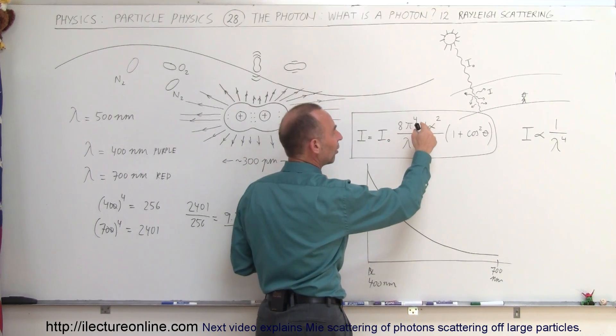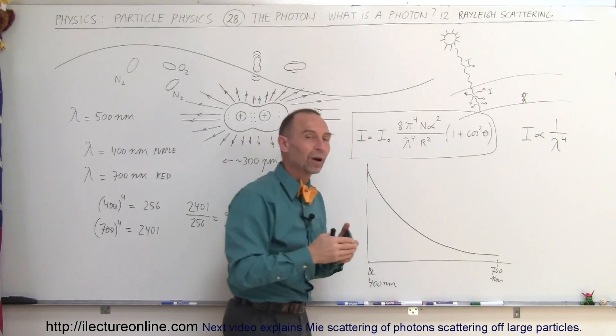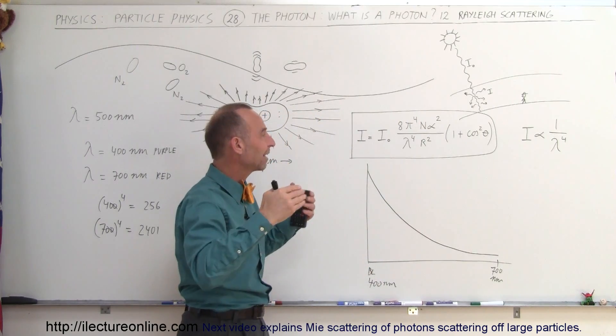Also, of course, the intensity is proportional to 1 over the distance squared. As you go farther away from the source, you get less and less of the intensity.